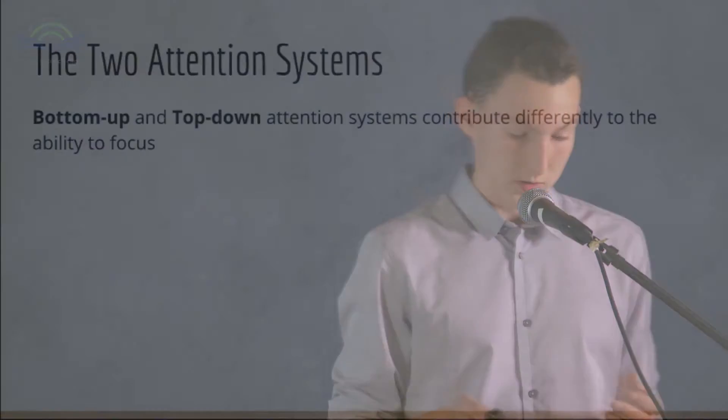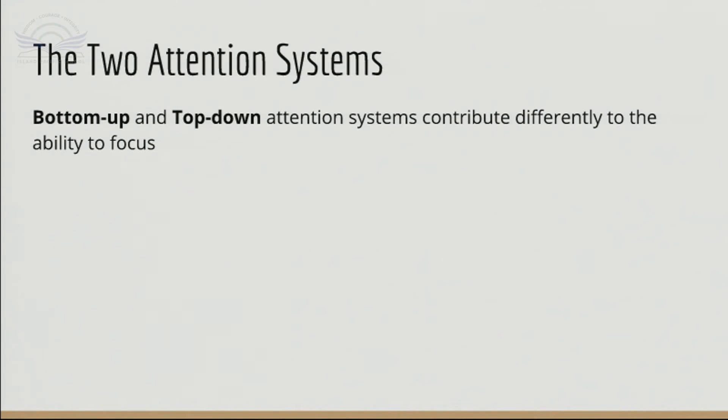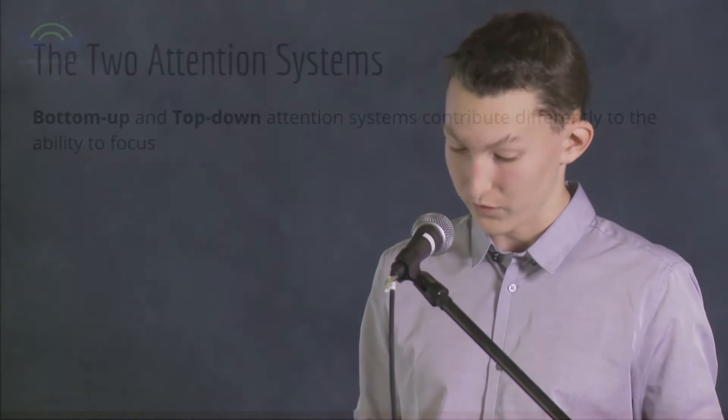Top-down and bottom-up attention, or the two attention systems. So the human brain actually has two attention systems. Bottom-up and top-down. Both of these attention systems contribute differently towards our ability to be able to focus our attention and be able to choose to focus that attention onto the right thing.